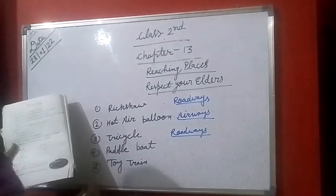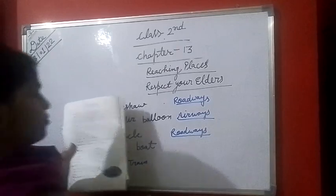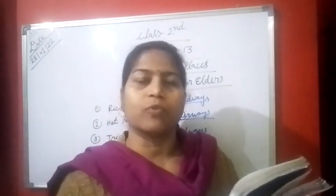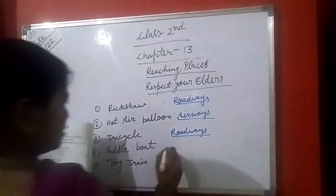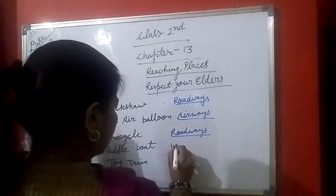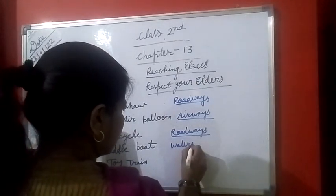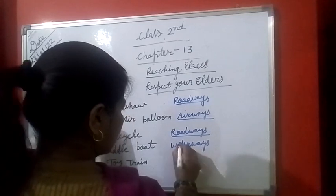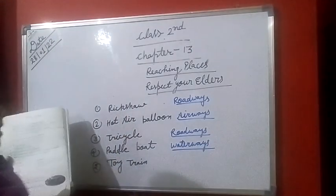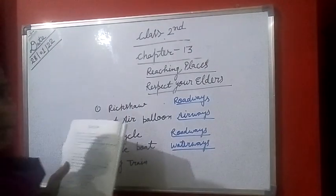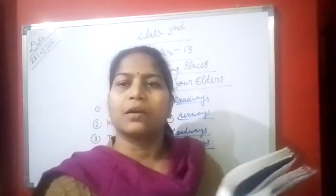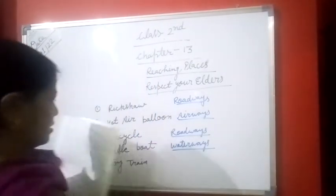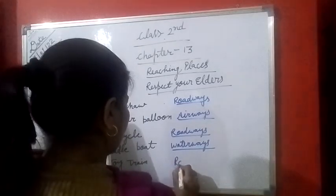Number 4: Paddle boat. Koi paddle boat ho, to woh kahan chalega? Road mein to kahan chalega? Road pe hi chalega? Road pe hi chalega — roadways.